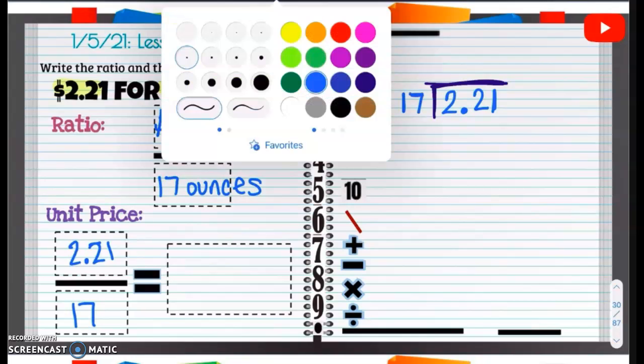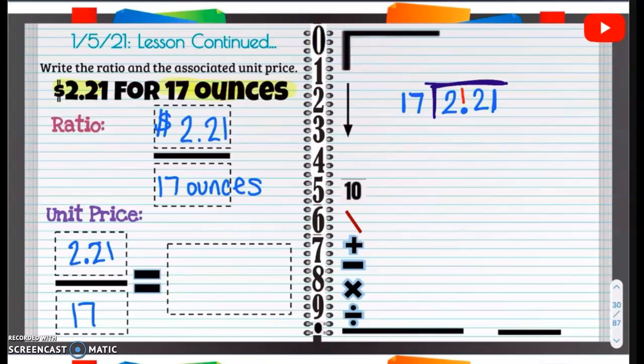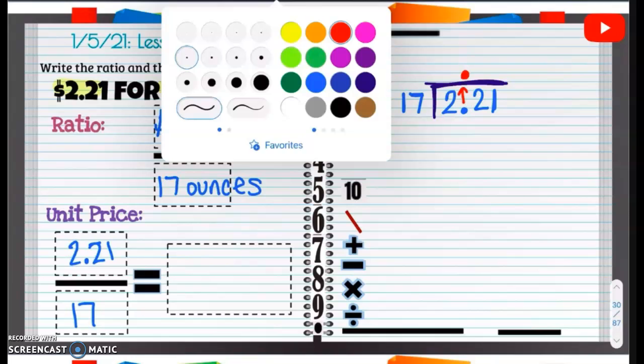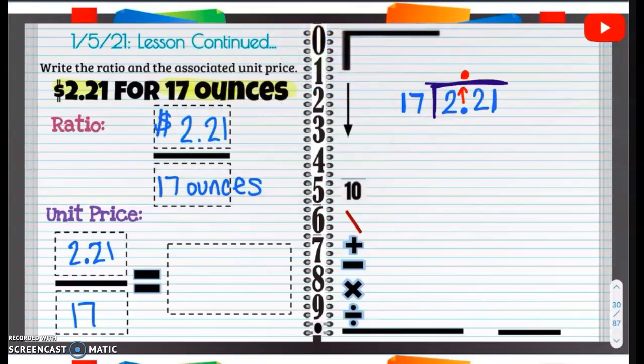When we have a decimal, we are going to pop it up. Pop it up. Now, can 17 go into 2? No, it cannot. So we are going to put a 0 up there because it can't go into 2.